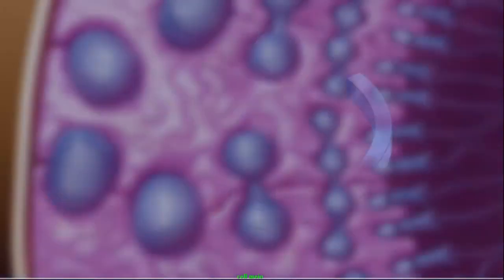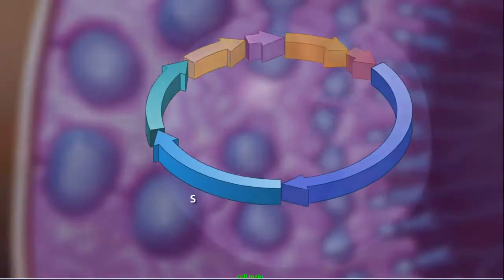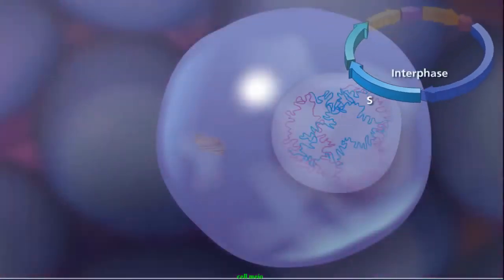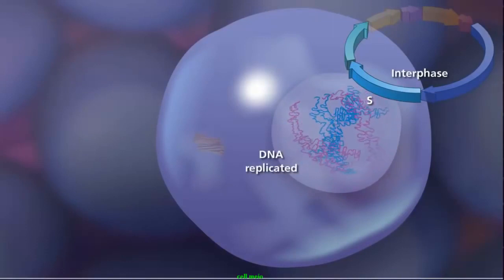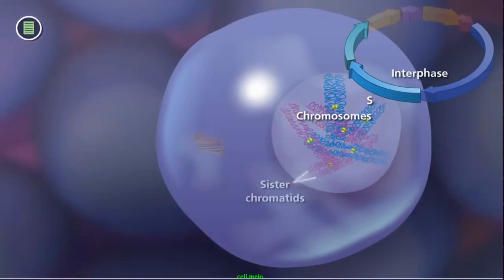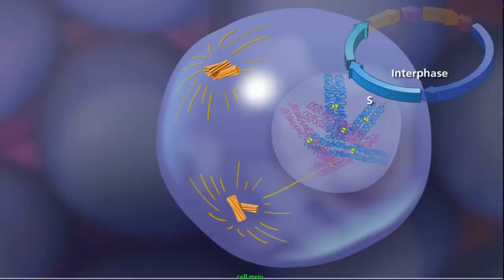As in mitosis, meiosis begins after a cell has successfully completed the G1, S, and G2 stages of interphase. During the S phase of interphase, the DNA is replicated, producing two copies of each chromosome called sister chromatids. The paired centrioles in the cytoplasm duplicate and begin extending microtubules that will form the meiotic spindle.